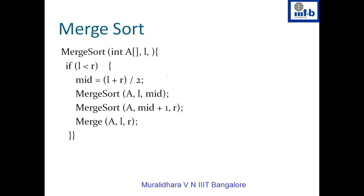The code looks very simple. The merge sort function takes an array with L and R. You first find the midpoint, then recursively sort from L to mid — the left part — then recursively sort the right part from mid+1 to R. Once both subarrays are sorted, you call the merge function. This continues as long as L is less than R. If L equals R, there is only one number and it is already sorted. If L is greater than R, it is not a valid range and we do nothing.